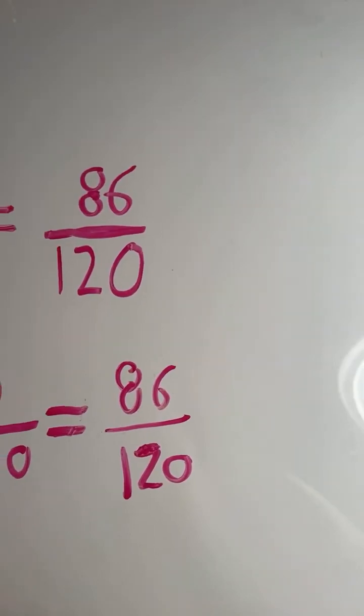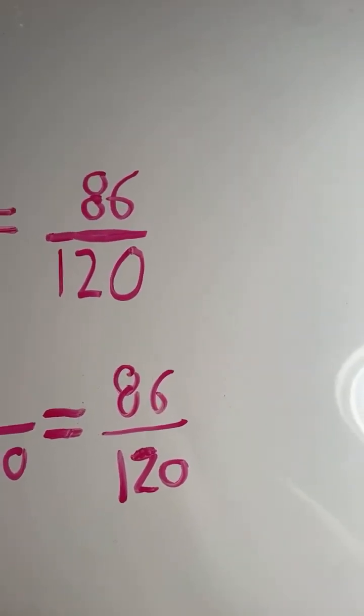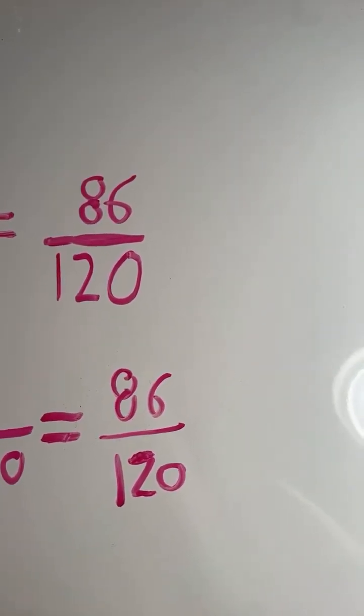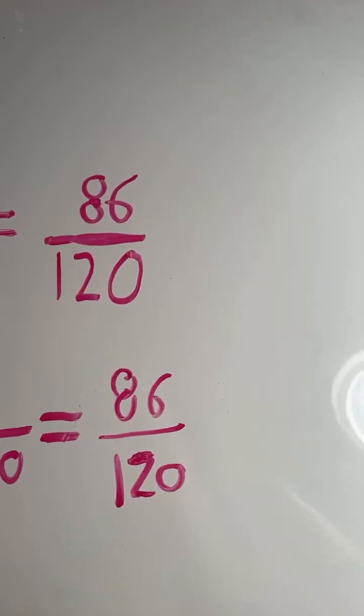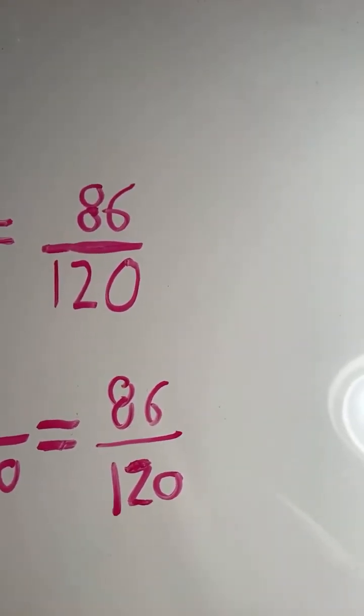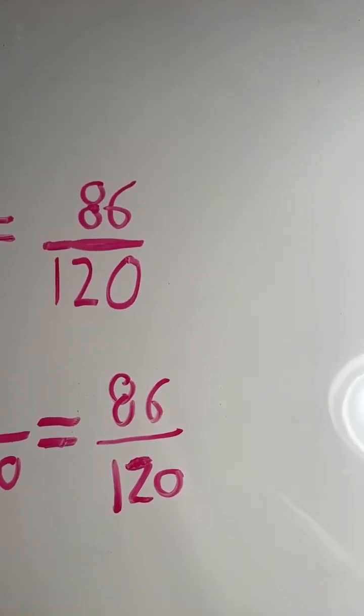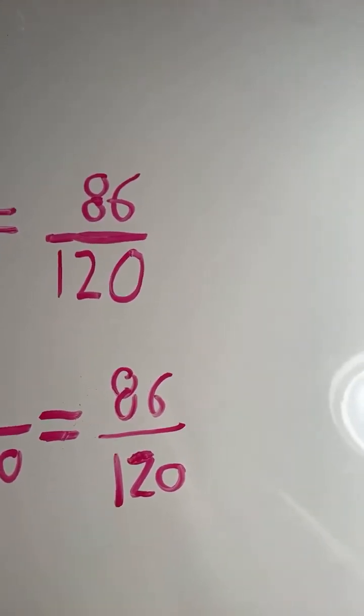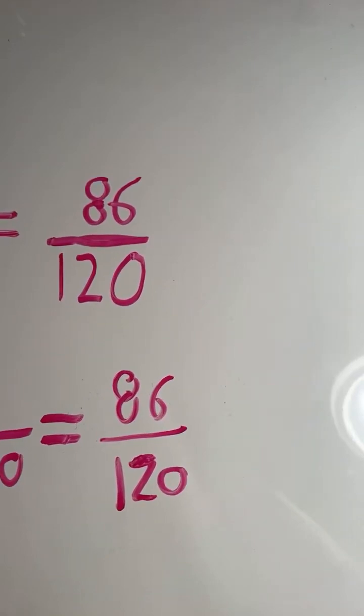So 86 120ths. Now the quickest, most efficient way is to divide the numerator and denominator by the greatest common factor. I don't know what the greatest common factor is off the top of my head.